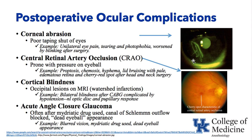Acute angle closure glaucoma: as discussed, avoid scopolamine or atropine for PONV prophylaxis in patients with glaucoma, because if that angle closes off, fluid builds up in the eye, the pressure rises, the canal of Schlemm outflow is blocked, and the eyeball gets very high pressure — it looks like a dead eyeball. If called to the recovery room and a patient has received atropine or scopolamine — remember glycopyrrolate does not cross the blood-brain barrier and does not cause pupillary changes — and they have this dead eyeball appearance, think acute angle closure glaucoma.